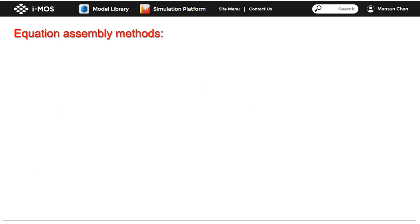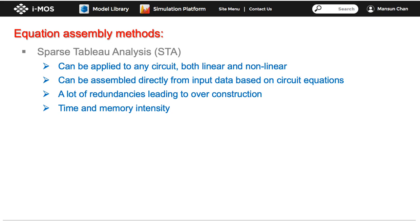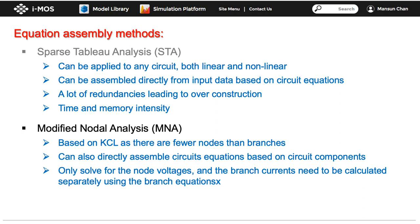Now with KCL, KVL, and the branch equations, we can solve for all unknowns. The most generic method is sparse tableau analysis, which puts all three sets into one large matrix — but it is time-consuming. A more efficient method is Modified Nodal Analysis (MNA), which is also the main algorithm used by SPICE. MNA solves only for the node voltages in the matrix solution, not the branch currents, which can be easily found using the branch equations once the node voltages are known.